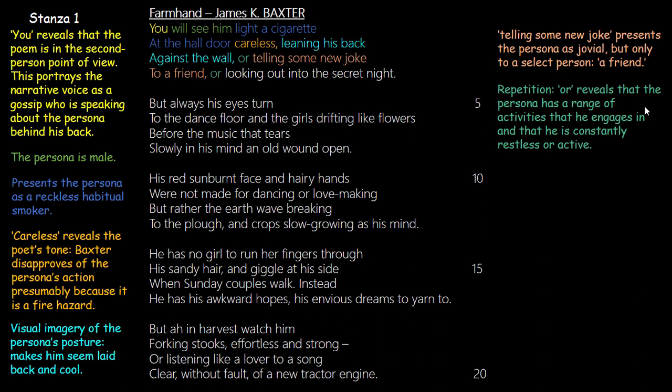The fact that he tells jokes only to a friend could mean Baxter is that friend, or that Baxter eavesdrops and goes about telling others. In the first stanza, Baxter uses a lot of 'ors' to show alternative actions the man takes, presenting the persona as restless and constantly active — he smokes, leans, tells a joke, looks into the night. These multiple actions in just the first stanza reveal someone who is continuously engaged.